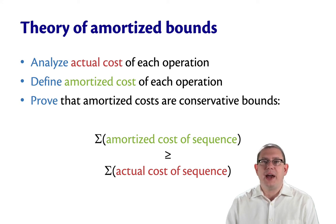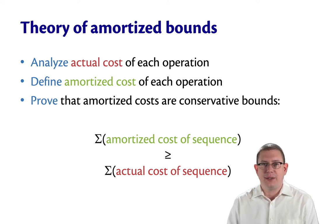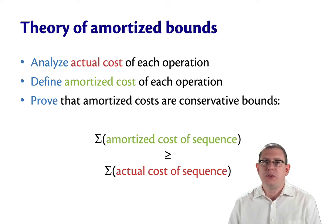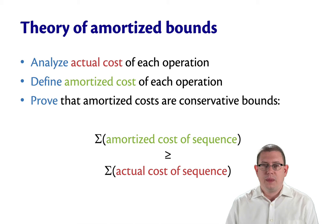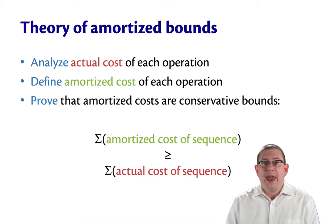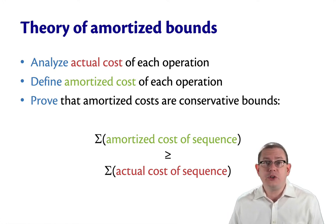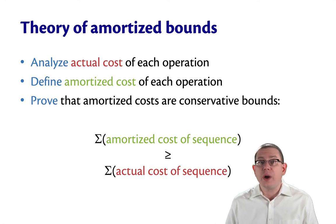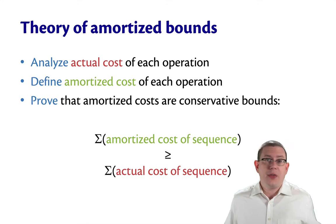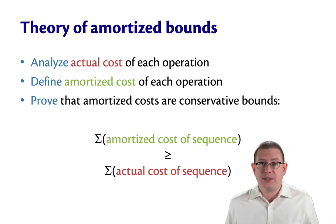We've seen two examples now, informally, of how to use amortized analysis with hash tables and two-list queues. Let's talk a little bit more about the theory behind it. With amortized analysis, we analyze the actual running time of every operation. This is just the normal kind of efficiency analysis that you've learned already in 11.10 and 21.10 and in the other courses. Nothing changes about that with amortized analysis.